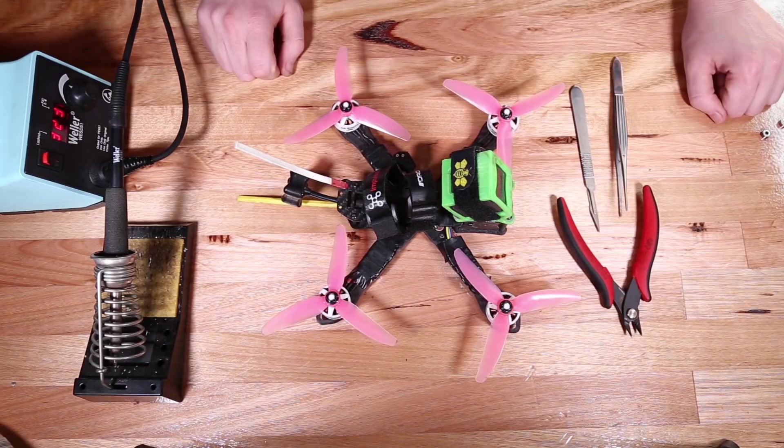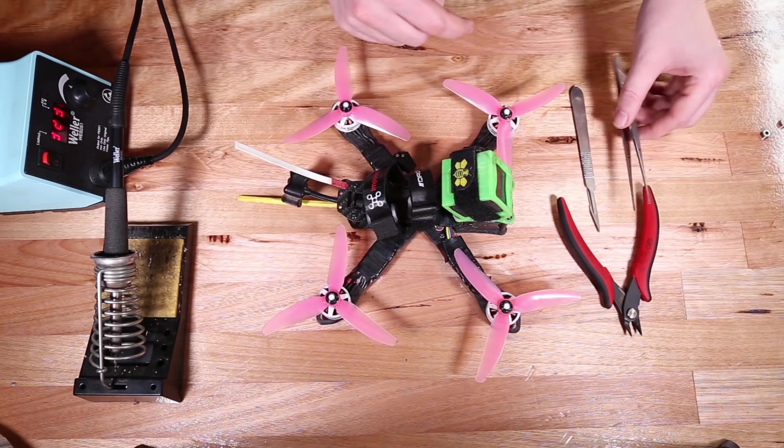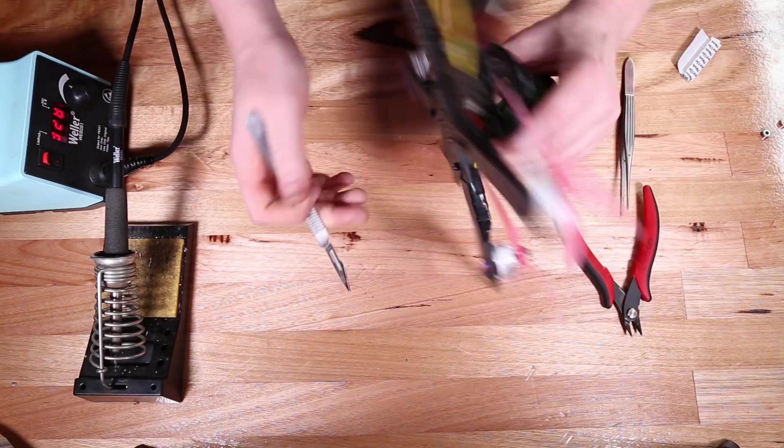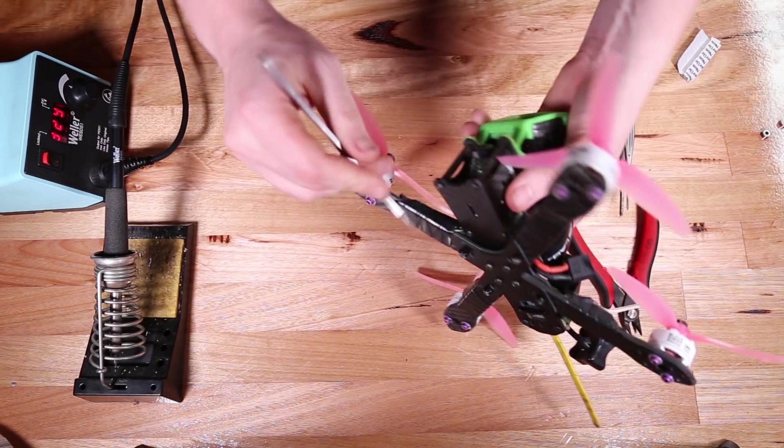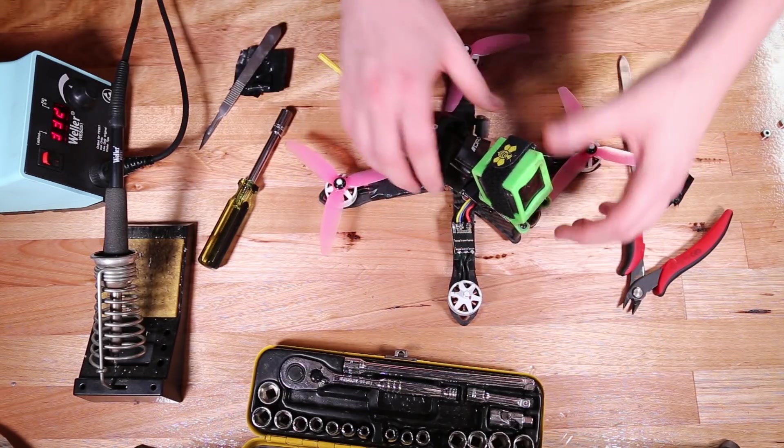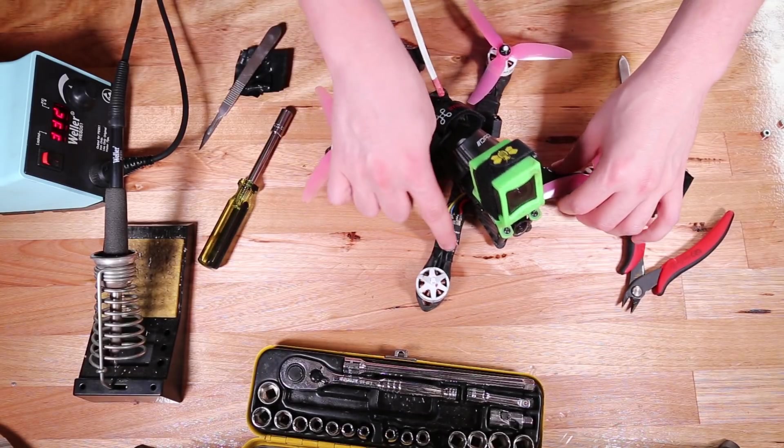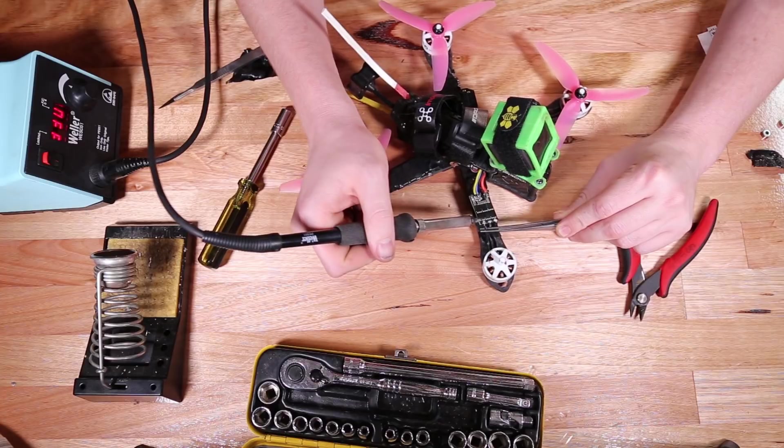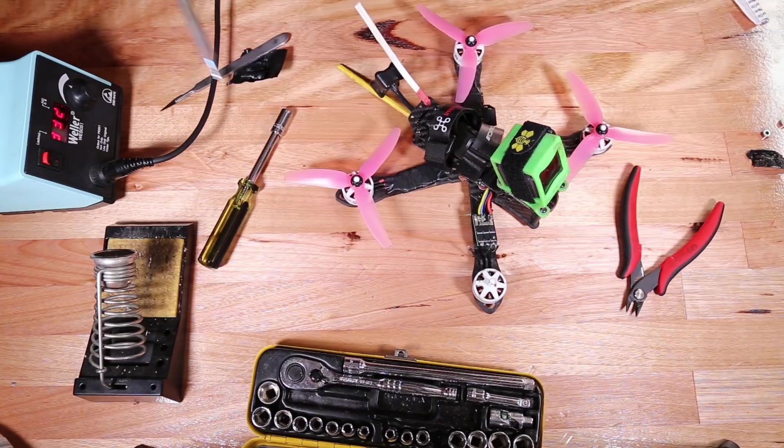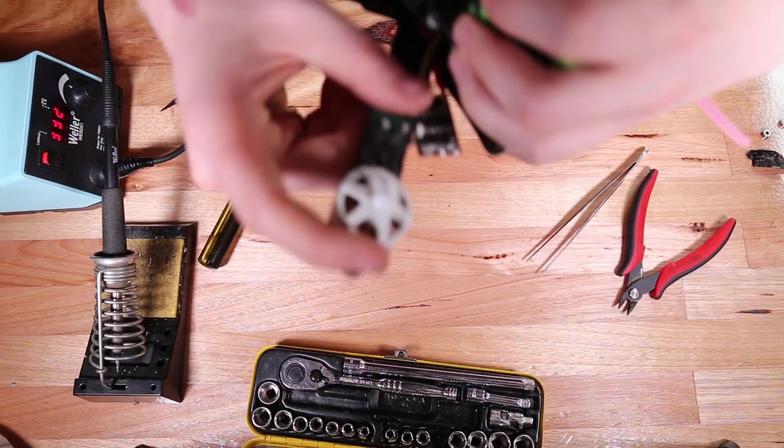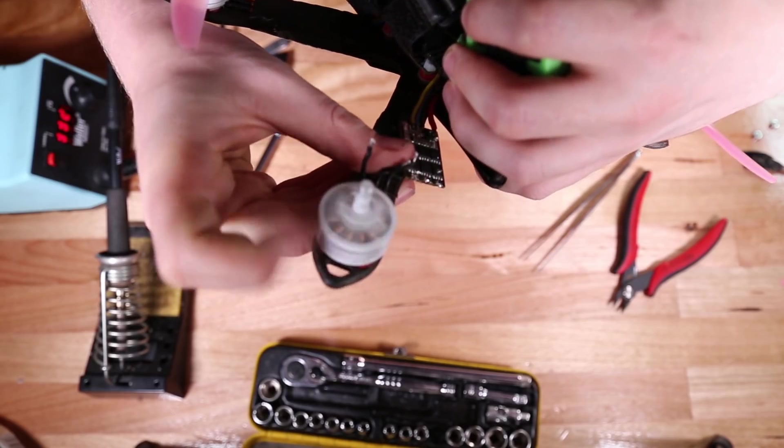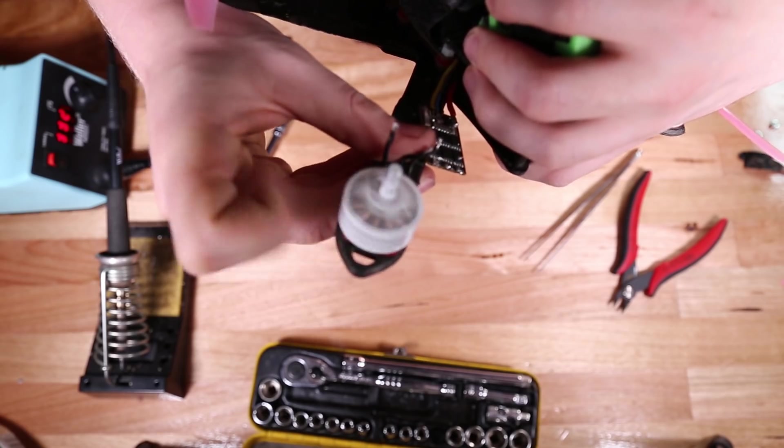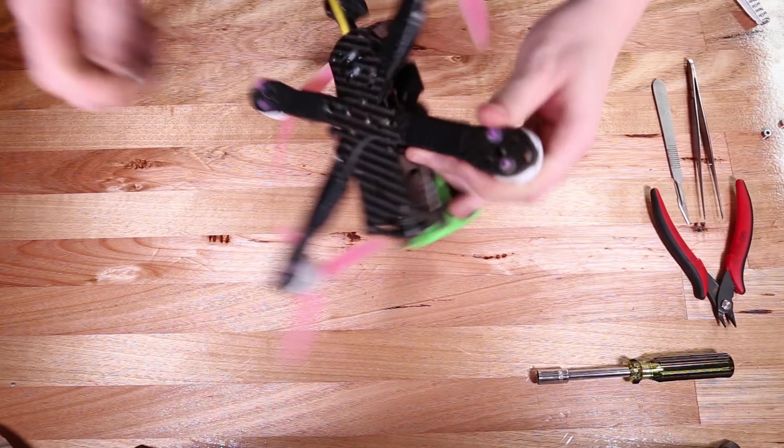So we're all set up here. First thing we're going to do is we're going to cut the tape off this arm so we can get at the ESC. So what we're going to do next is we're just going to unsolder this ESC. Okay now let's see if we can hear that. Those bearings do not sound healthy. Now we're just going to take the motor off.